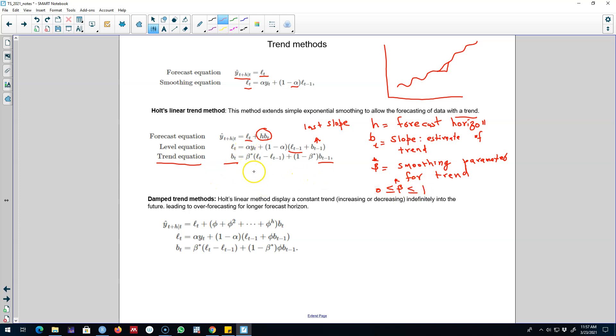And again we'll have alpha here, and alpha will be between 0 and 1. Alpha is a smoothing parameter here. Again, essentially we are extending the same two equations here and including the trend equation here.